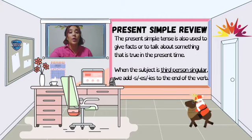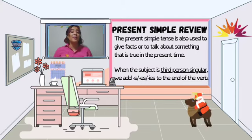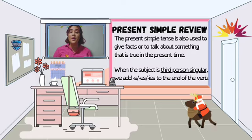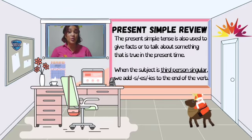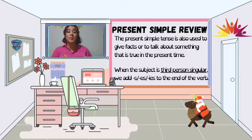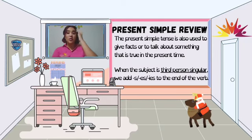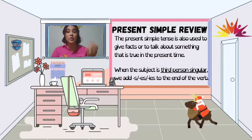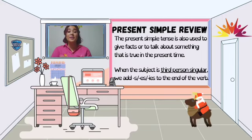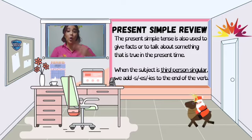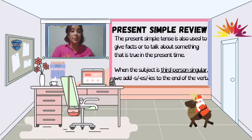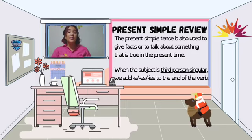El presente simple es algo que utilizamos para hablar sobre hechos o cosas que no cambian, o para hablar sobre cosas que son ciertas o que son verdad en el momento — lo que es el presente — es decir, acciones que suceden generalmente pero que no se están dando de forma continua.